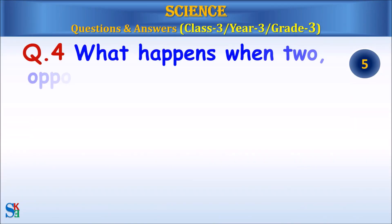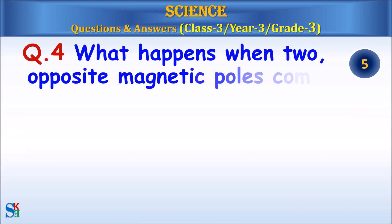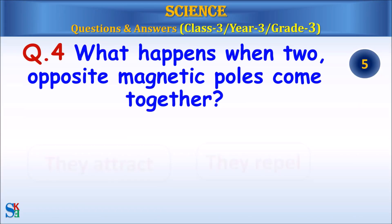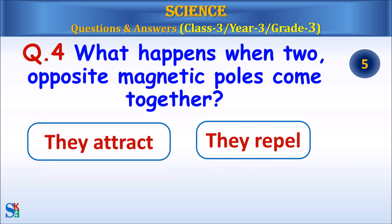Question 4: What happens when two opposite magnetic poles come together? They attract, or they repel?